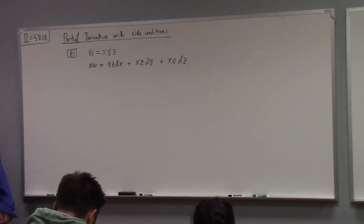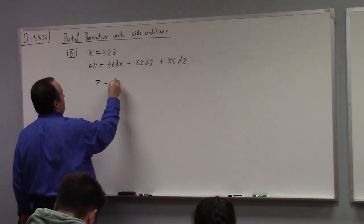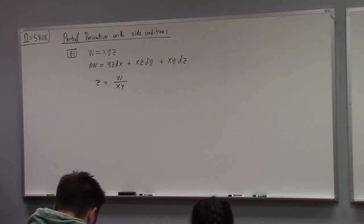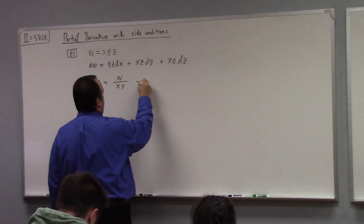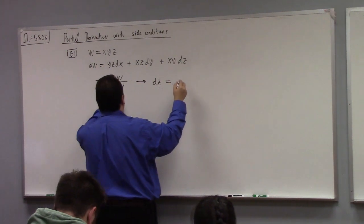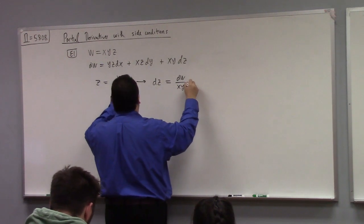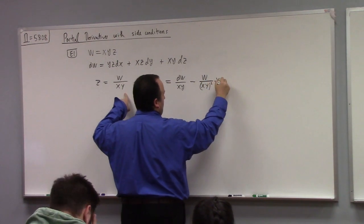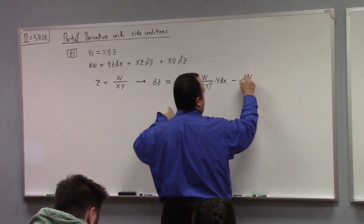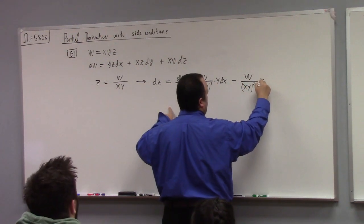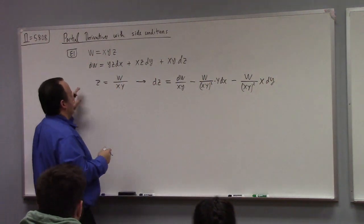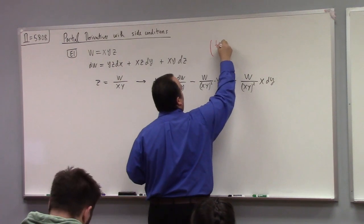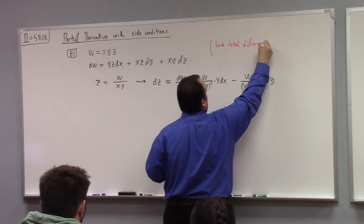Then on the other hand, I could also solve for Z. I could solve for Z: Z equals W over XY. So from that, I get dZ equals dW over XY minus W over XY² times Y·dX and minus W over XY² times X·dY. So in both of these cases, what am I doing? I'm taking the total differential.